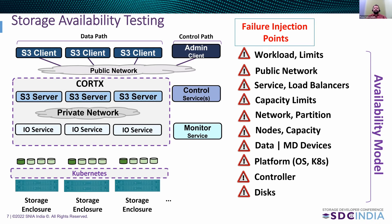Above the networking layer are capacity limits imposed by underlying devices and abstractions, which may be soft or hard limits. For distributed systems, load balancers and related services play a vital role but also become failure points, making storage systems inaccessible partially or completely. At the top layers, as cloud-based storage depends heavily on public networks, those are subject to failures as well, and we need to test workloads pushed to maximum limits from external or public networks.